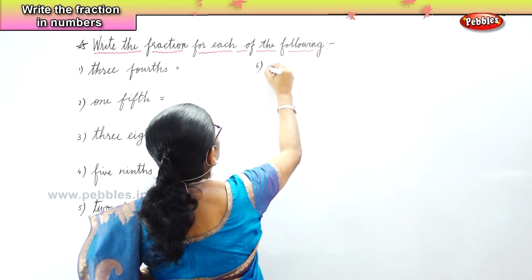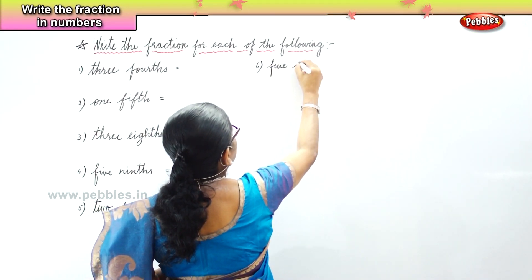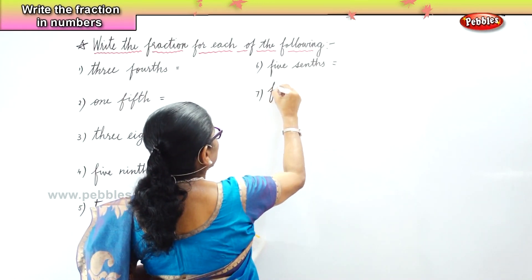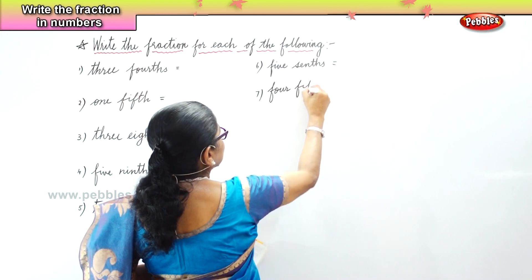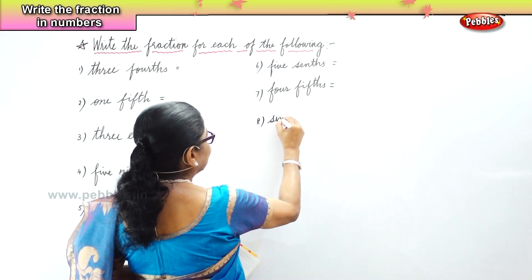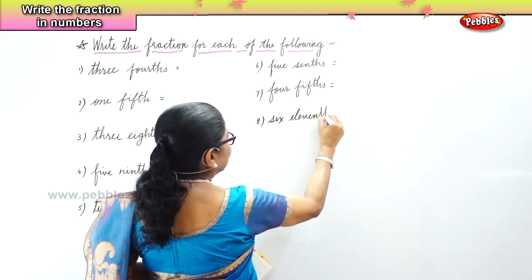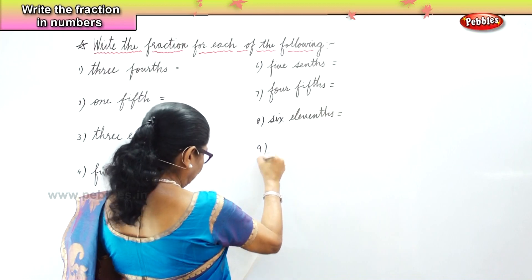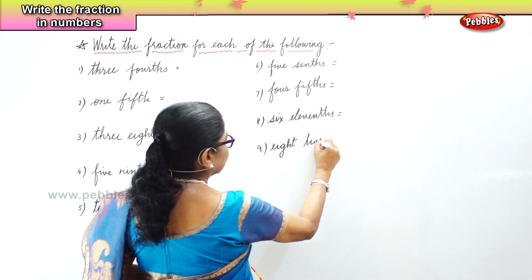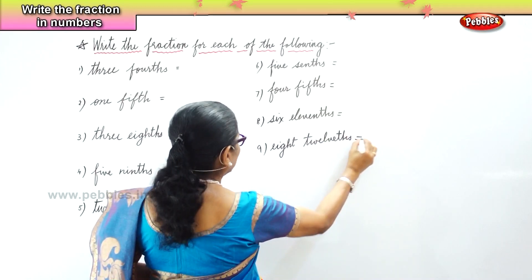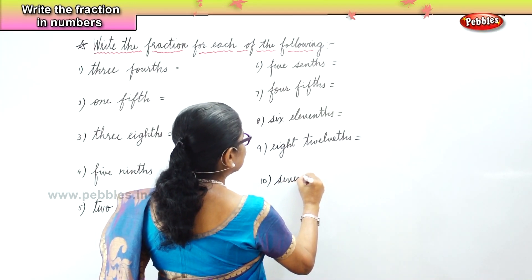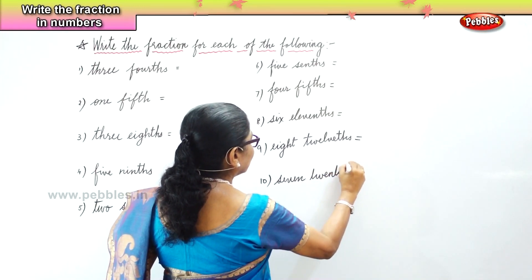Five tenths, four-fifths, four-fifths, six-elevenths, eight-twelfths, eight-twelfths, and one more — seven-twentieths, seven-twentieths.